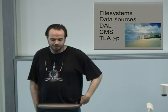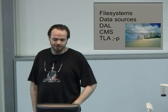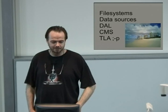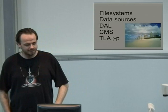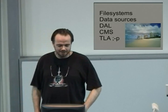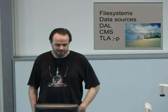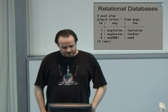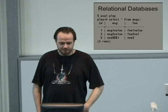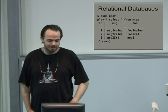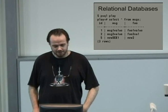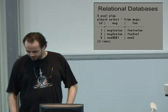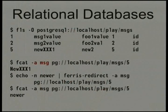I had been told in previous talks that I shouldn't call it a virtual file system — that idea is not really cool these days — whereas I tend to disagree. You could call it a data abstraction layer, a CMS, data sources, or any other three-letter acronym you like. For relational databases, moving from XML and Berkeley DB: if you have a small table called 'play' with a bunch of messages and IDs, you can use FLS to get directly at the relational table as a file system.